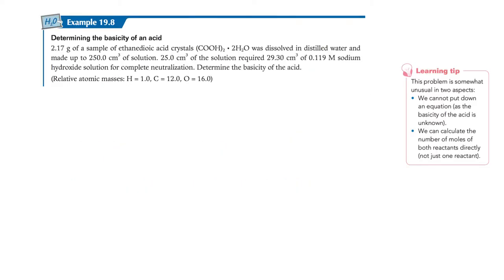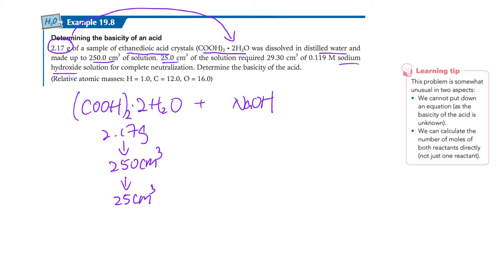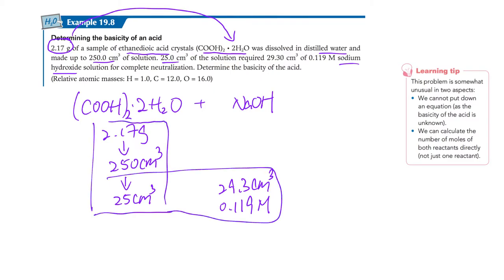Now let's look at the first example — we're going to determine the basicity of an acid. We have 2.17 grams of ethanedioic acid. Remember, this mass of 2.17 grams includes the H₂O in the formula. We dissolve it in water and make it up to 250 cm³. Then 25 cm³ of that is neutralized by sodium hydroxide, with a volume of 29.3 cm³ at 0.119 mol/dm³.